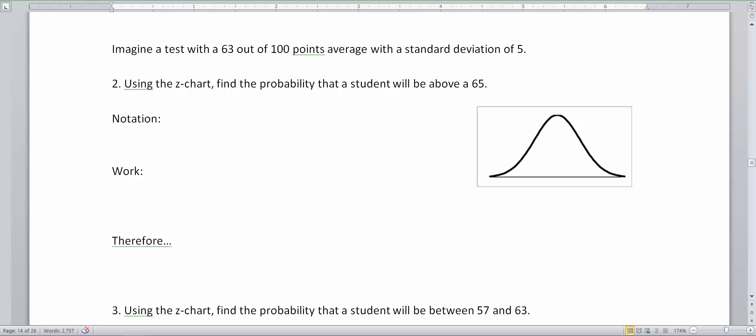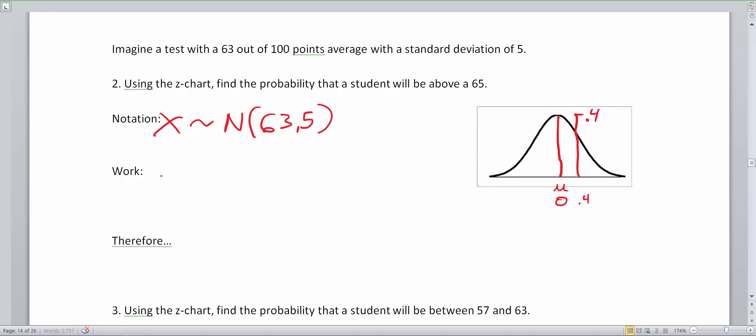I'm going to change to a red pen here and draw a straight line. This is my mu, and we did our work on the previous page. All of this can match. This is going to be our 0.4. Our notation hasn't changed, x belongs to N(63, 5). Our work is still z equals 65 minus 63 divided by 5, and this equals 0.4. And if you go to the table, this gives us 0.655.